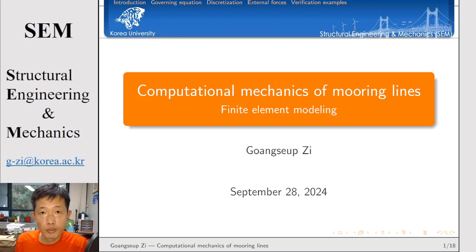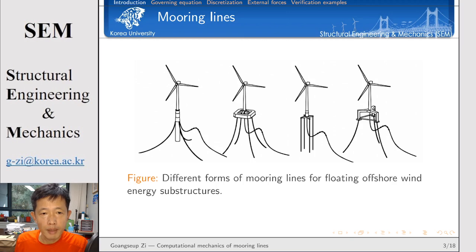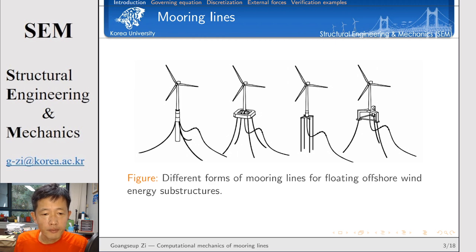Let's talk about the analysis of mooring lines using the finite element method. First, let's talk about what mooring lines are. We are interested in developing floating offshore wind energy substructures. To keep the position of floating offshore wind energy substructures, we need to apply mooring lines. One end of the mooring line should be attached to the structure and the other end should be anchored on the sea bottom.